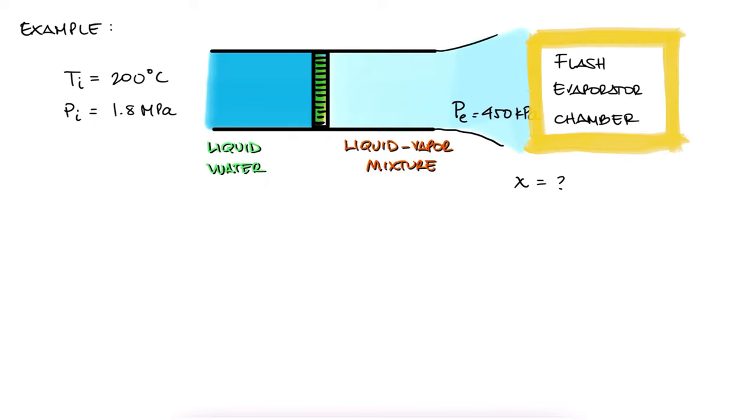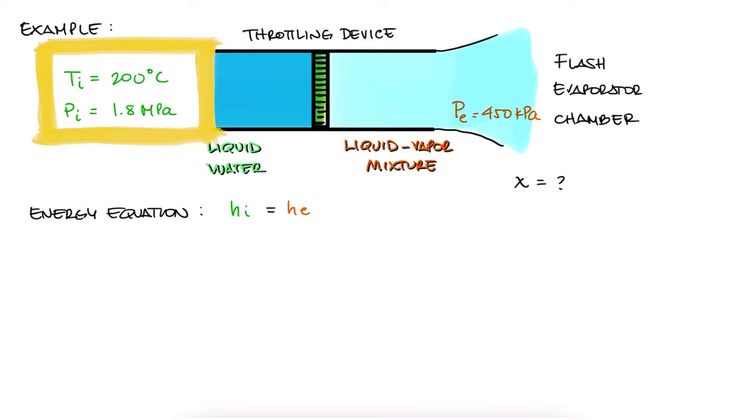We don't really need to know what a flash evaporator chamber means here. All we know is that water is coming into a throttling device at 200 degrees Celsius and 1.8 megapascals, and exits that device at 450 kilopascals. From what we just learned, we know that in throttling devices, the specific enthalpy at the inlet is the same as the specific enthalpy at the exit. If we have two properties at the inlet, like in this case, we can figure out what the specific enthalpy is. And since the enthalpy at the exit is assumed to be the same, we can use that information and at least one property at the exit, in this case the pressure, to fully describe the properties and therefore the state of the water at the exit.